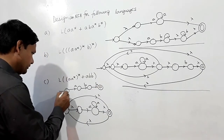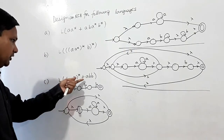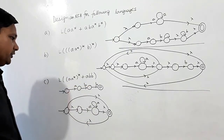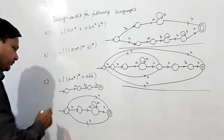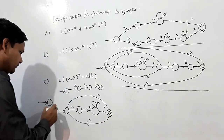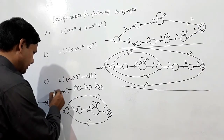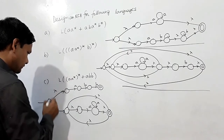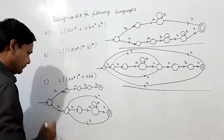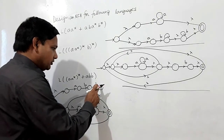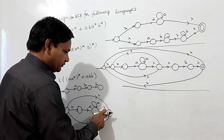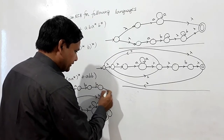There is one final state here and another final state, and we have to make a union of these two. First of all, this will be the initial state of this part. Now I have to make a common initial state, so I have to make a lambda transition from this state, and also I will make a lambda transition from this state.